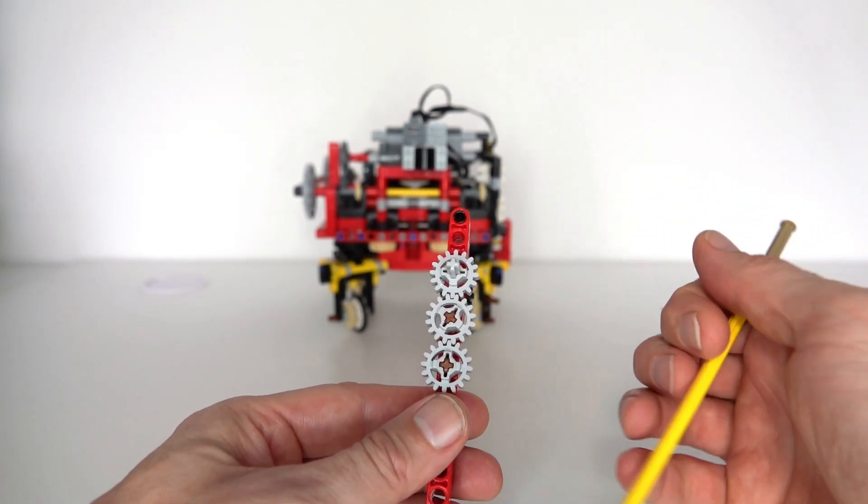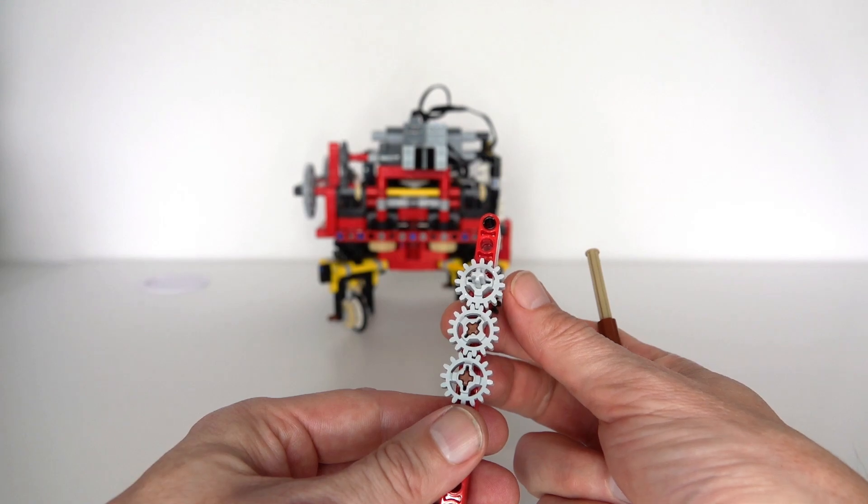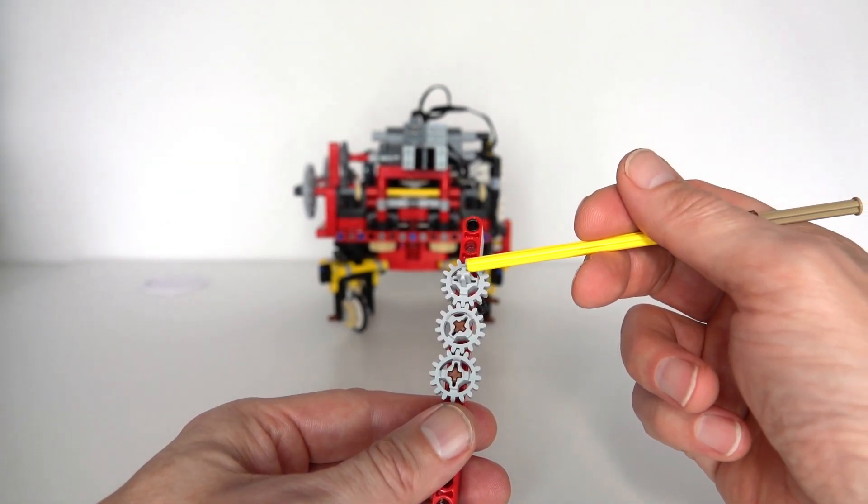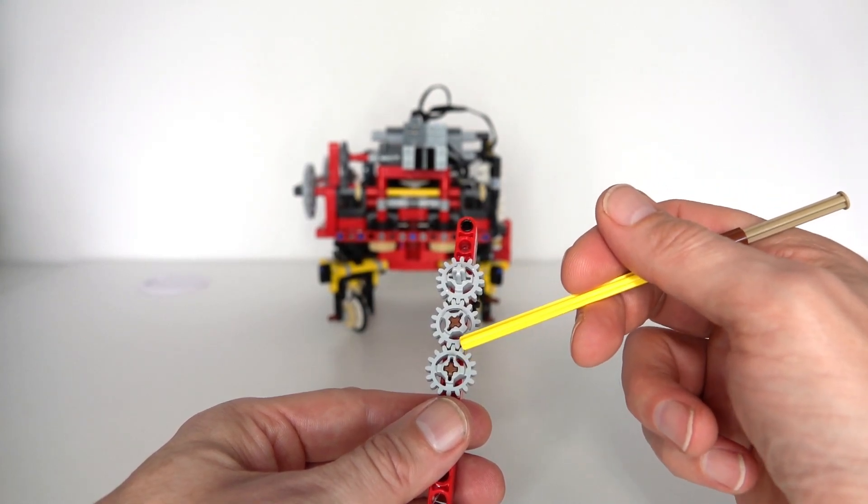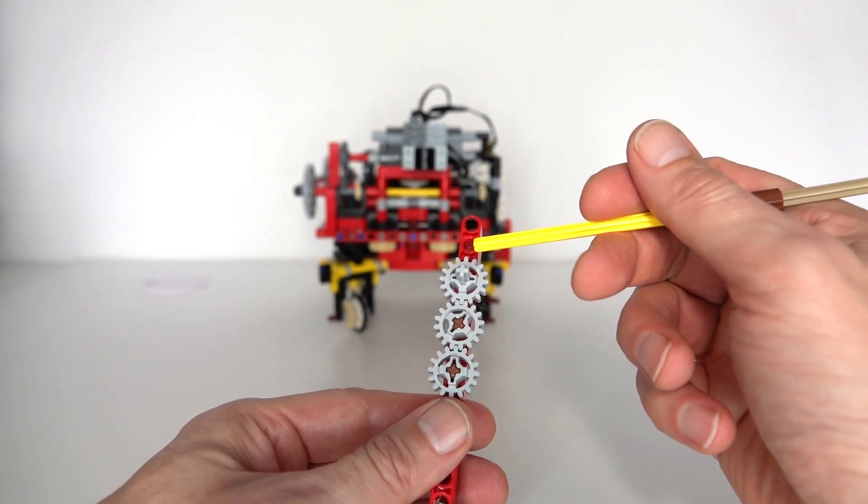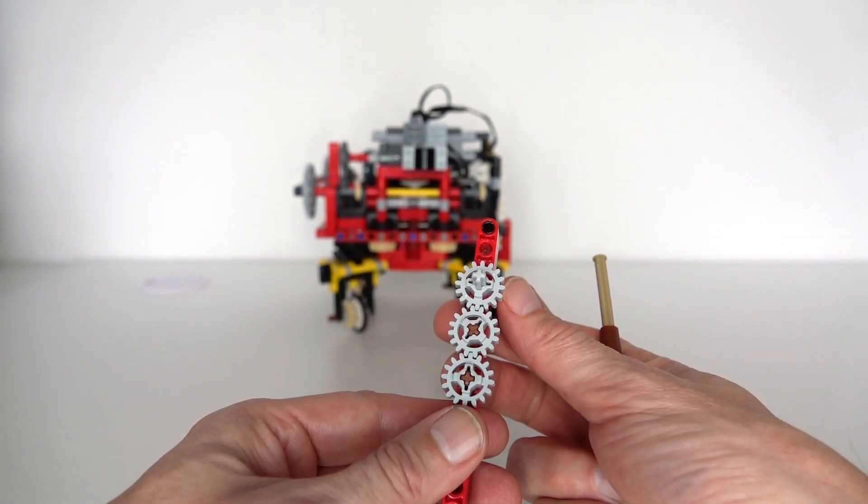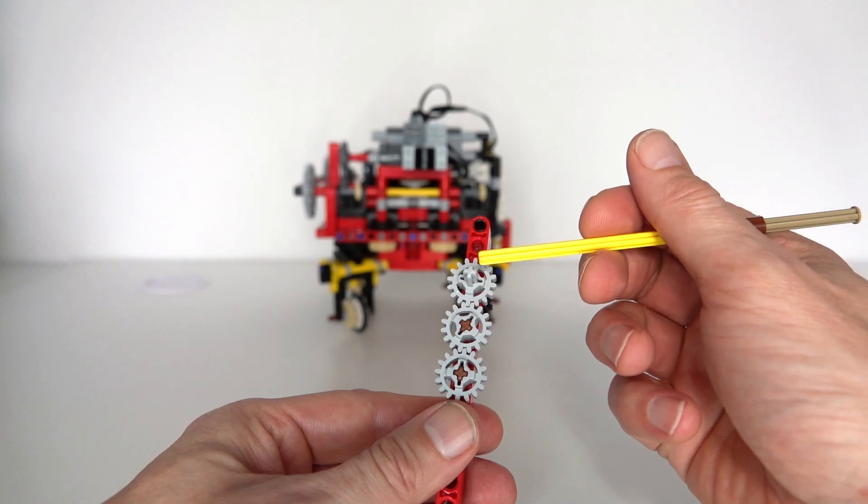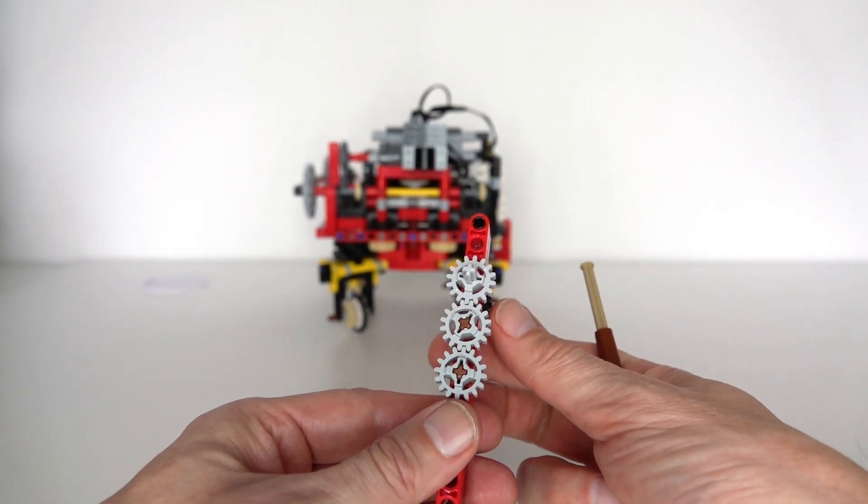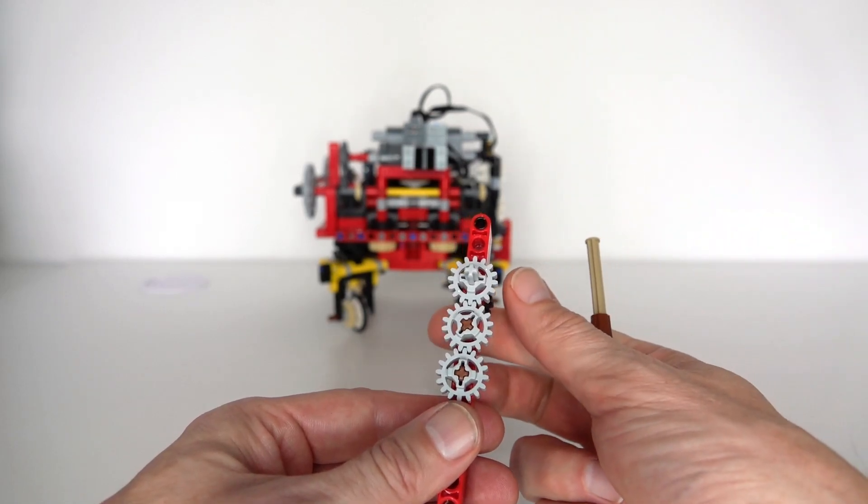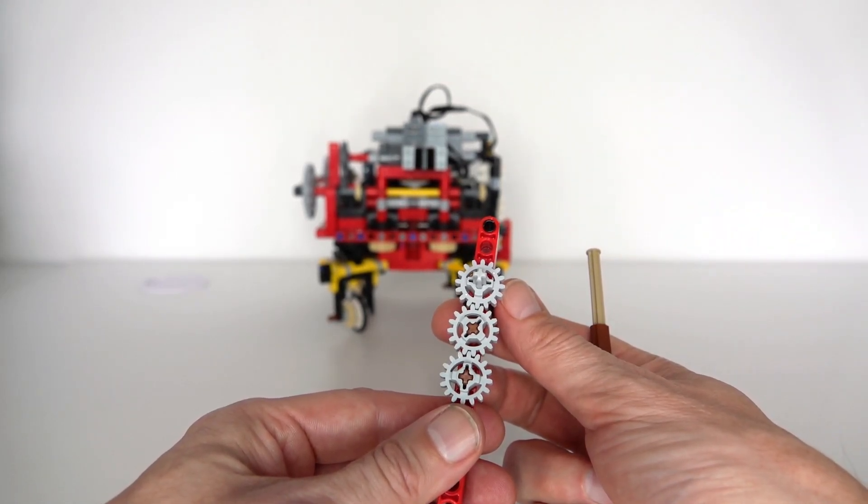And of course the more gears you've got in series the worse this particular phenomena gets. And what that causes is an angular difference between for example the top axle and the bottom axle, even though in theory they should both be the same. For example if both are at zero degrees, if I rotate that top one there'll be a slight amount of rotation that I can create at the top gear before that bottom gear rotates.